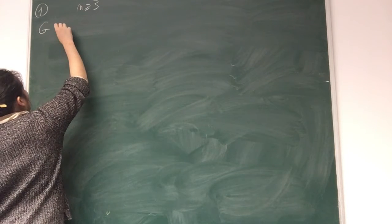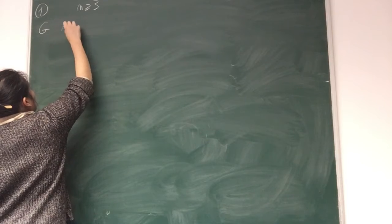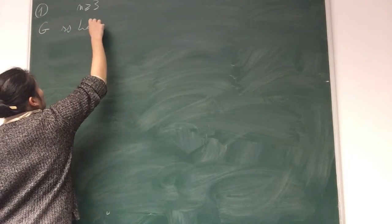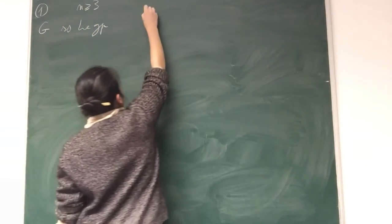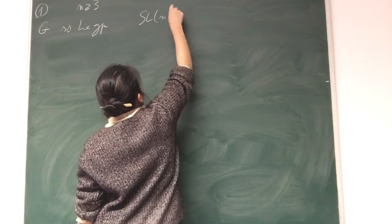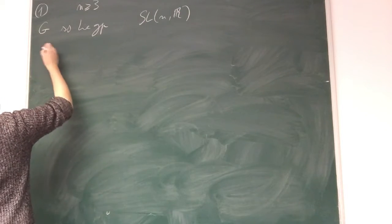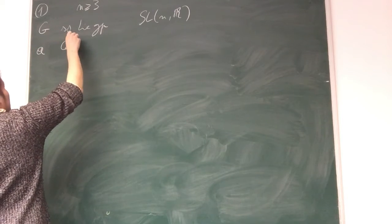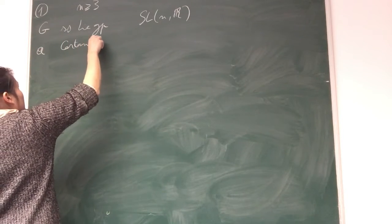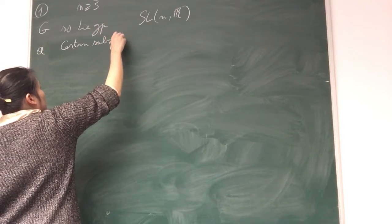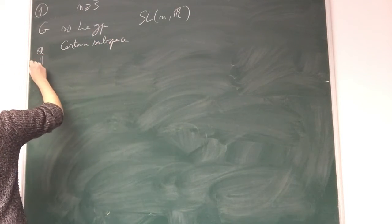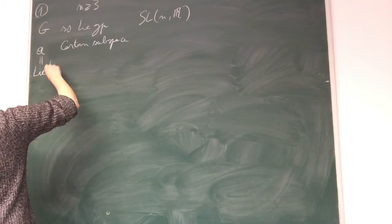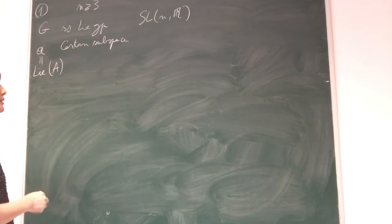n being an integer bigger than 3, G is a semi-simple Lie group. A is a subspace or subgroup. By this, I mean the Lie algebra of my maximum torus.